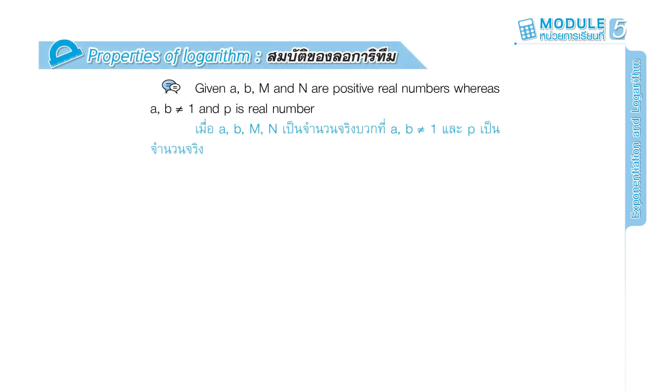Page 143. Properties of logarithm. Given a, b, m, and n are positive real numbers where a and b do not equal 1, and p is a real number.